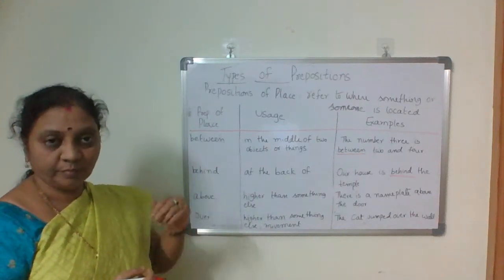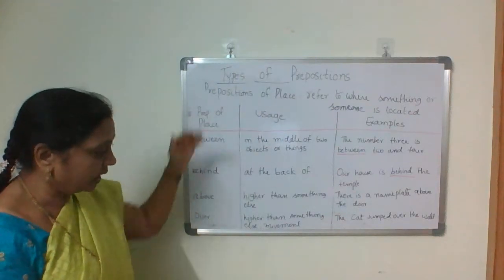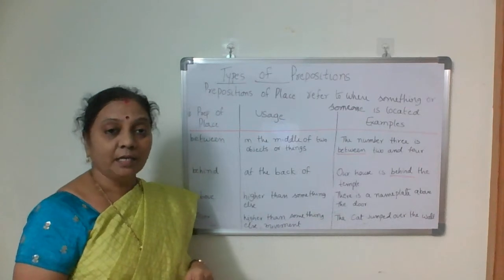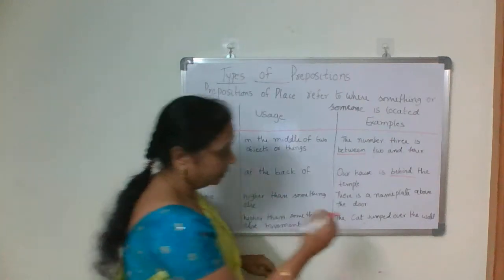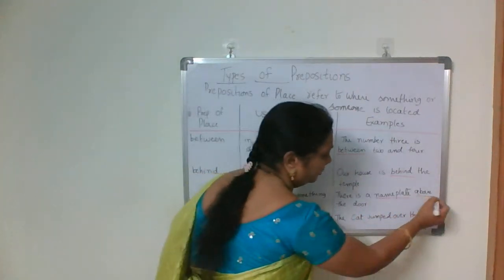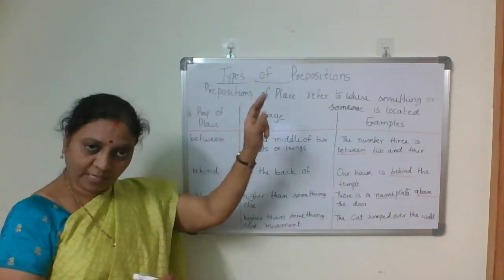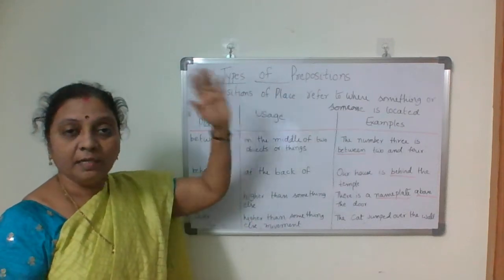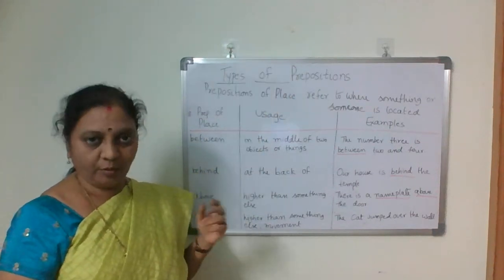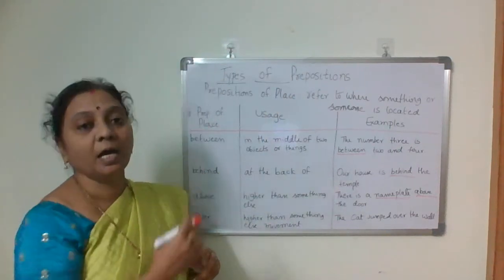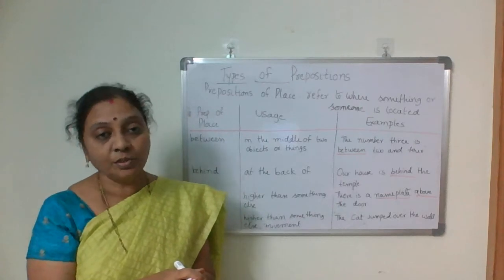Then 'above' means higher than something else — higher position. For example: 'There is a name plate above the door.' Above means one object is here and the other object is at a higher position, so we use 'above'.